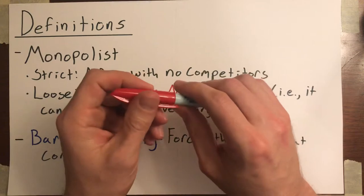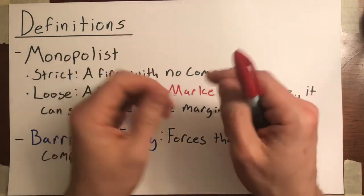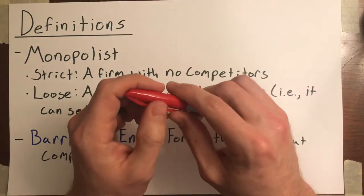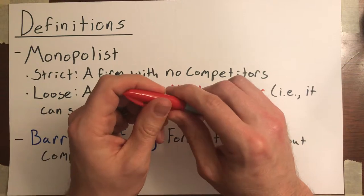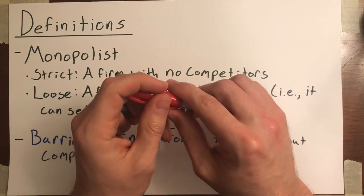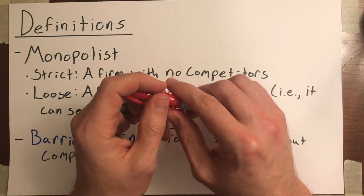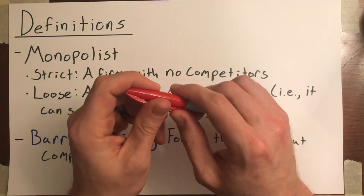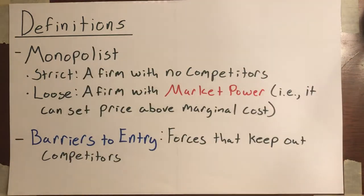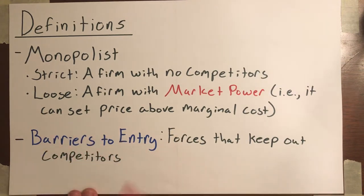Instead of there being lots of firms, there's going to be a single firm, and that firm is going to be able to set its price wherever it likes. It doesn't just have to accept the market clearing price. There's lots of information available on the profits that are being earned, and so firms can easily enter and exit the market if there are economic profits or losses.